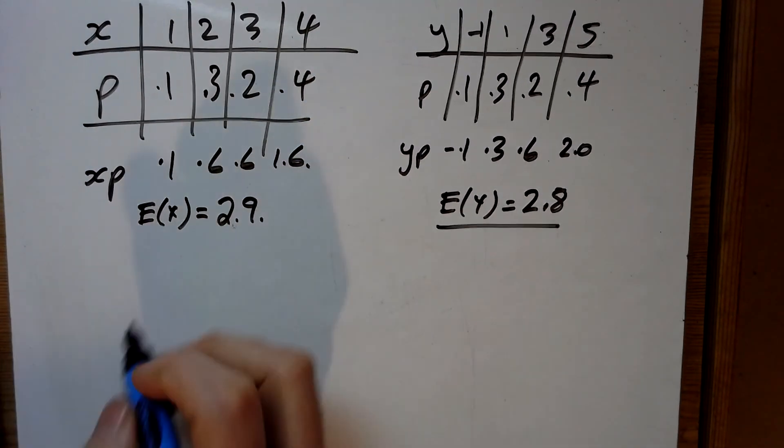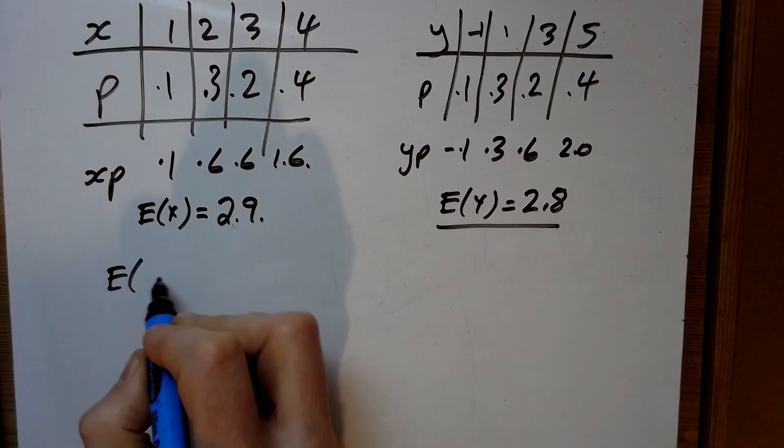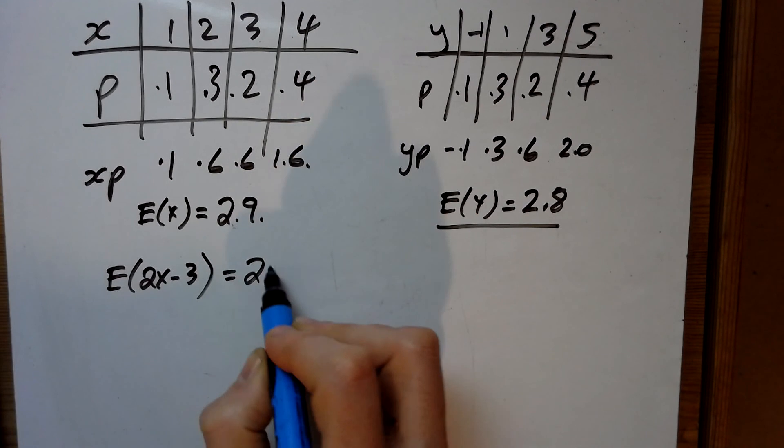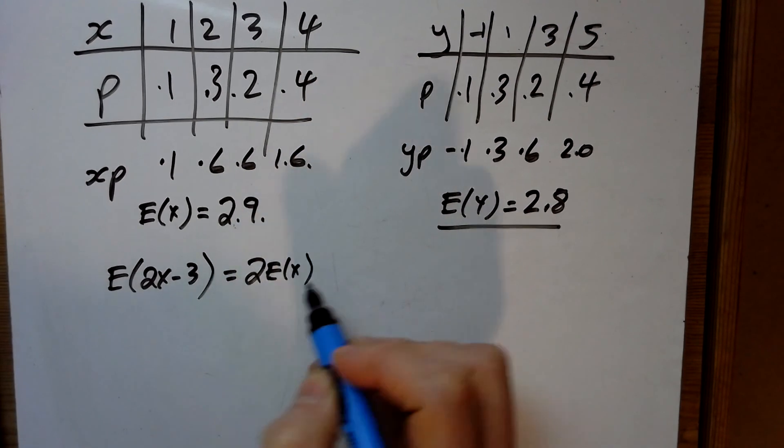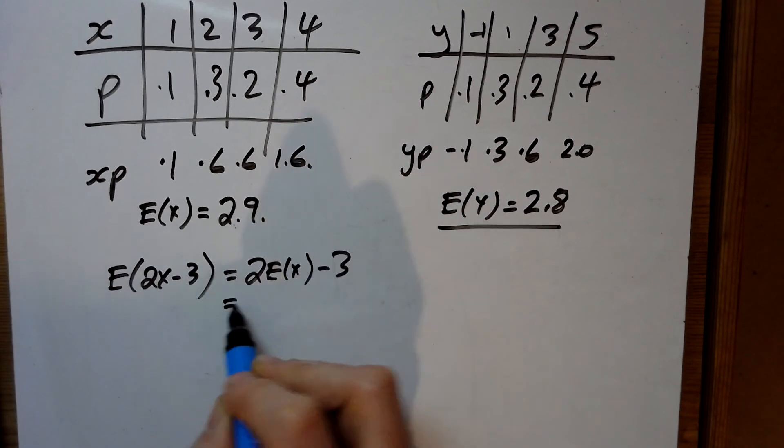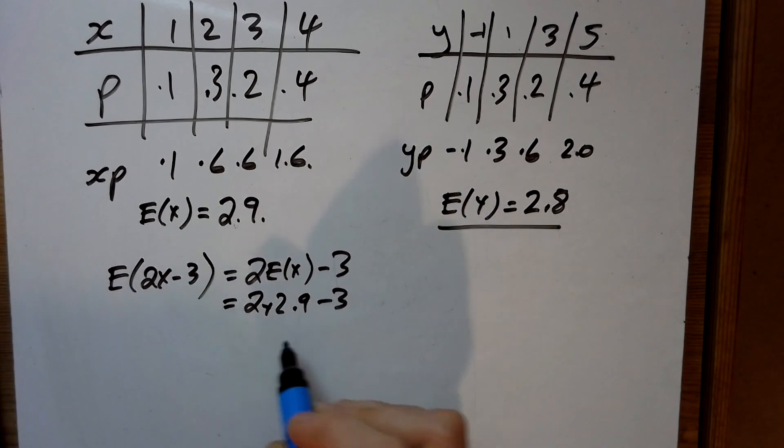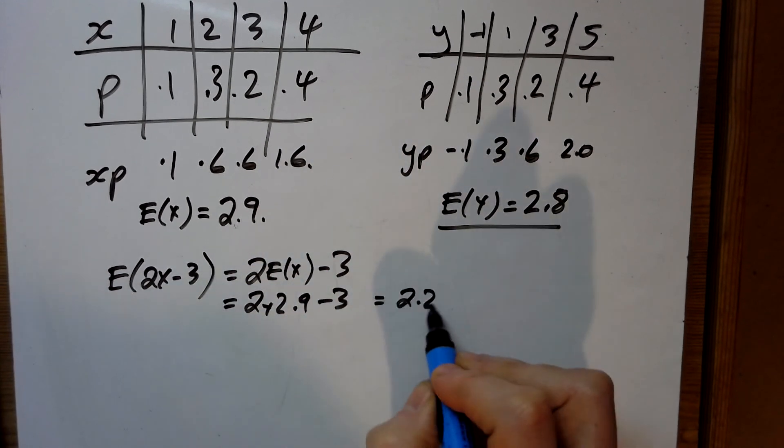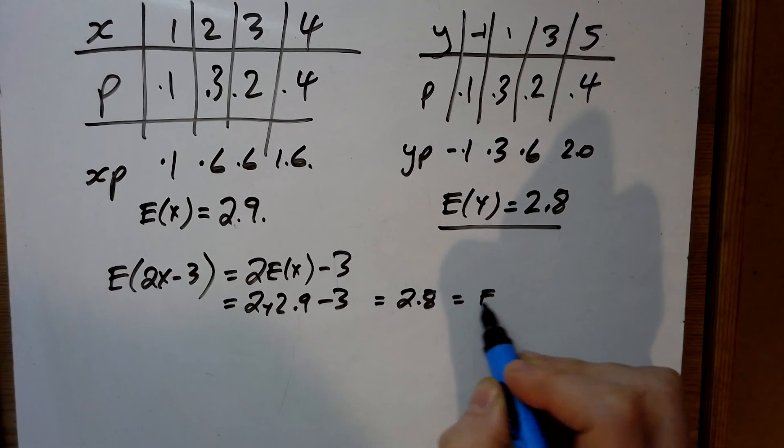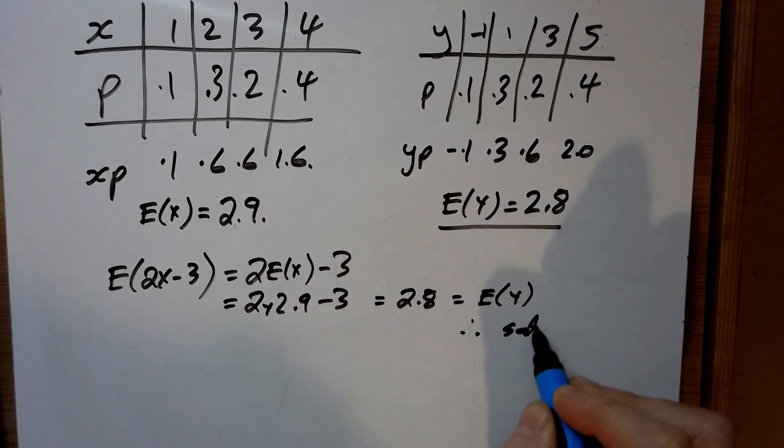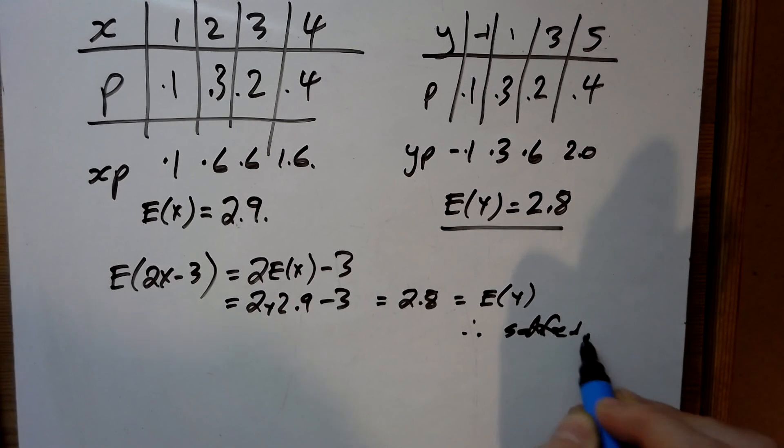And now it just says calculate, verify that expected value of 2x minus 3. So we're doing 2 times the expected value of x minus 3, so 2 times 2.9 minus 3. That is 5.8 minus 3 is 2.8, which equals the expected value of y. Therefore we're satisfied, aren't we? We expected that to happen.